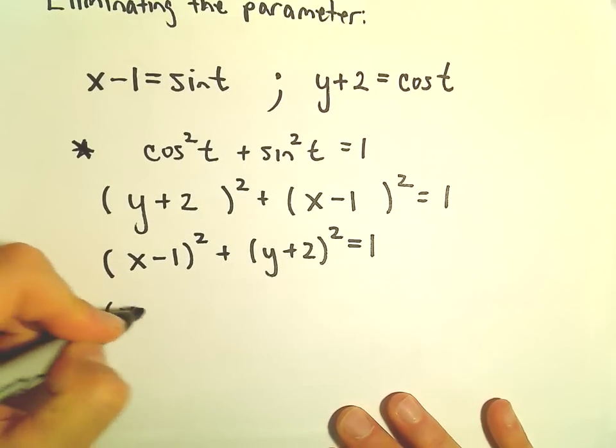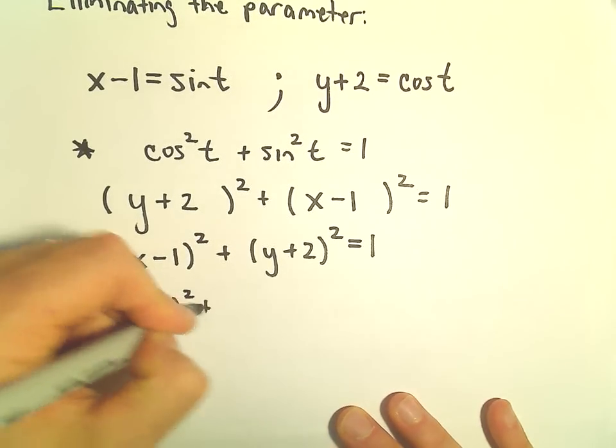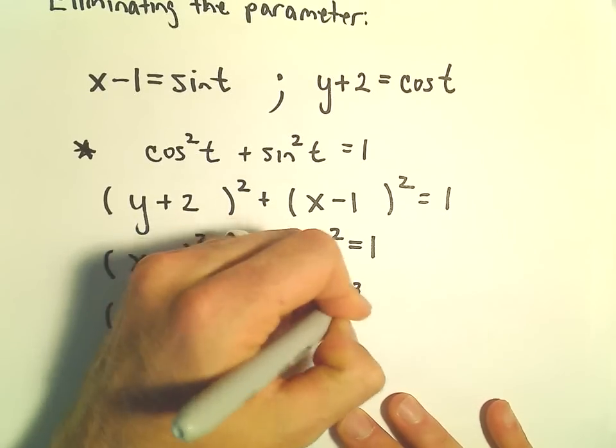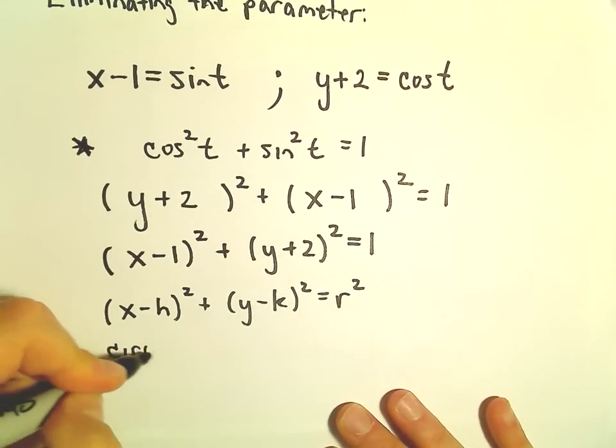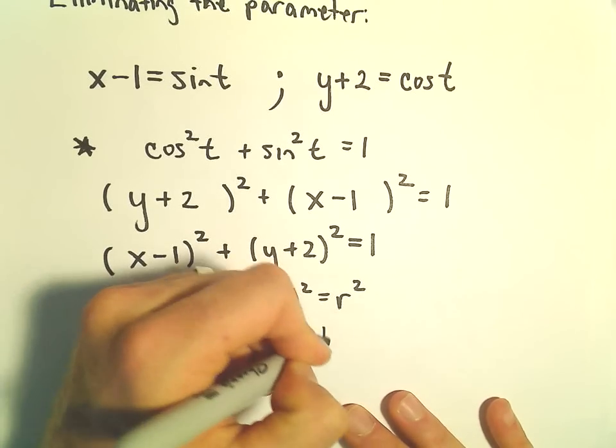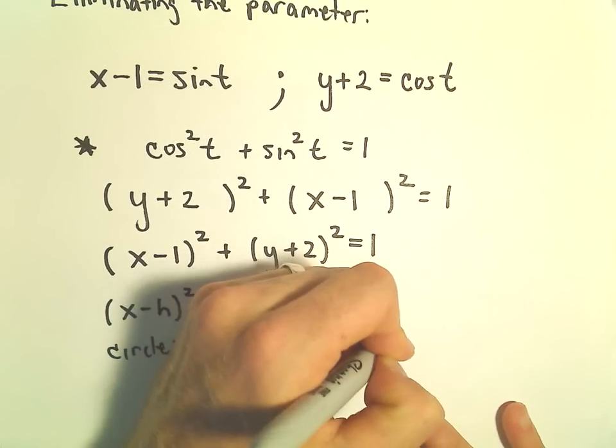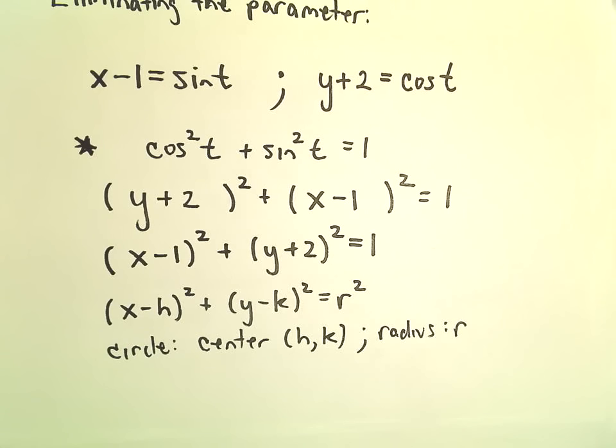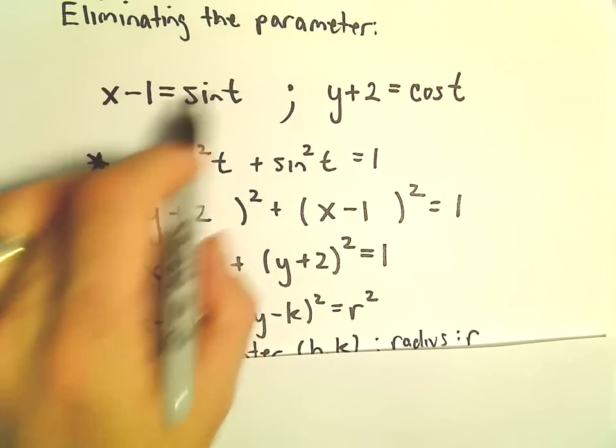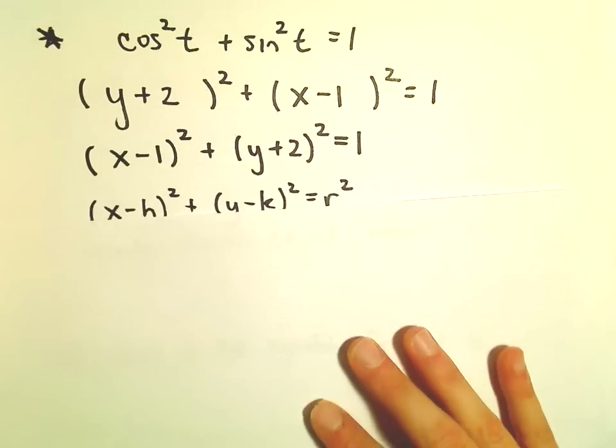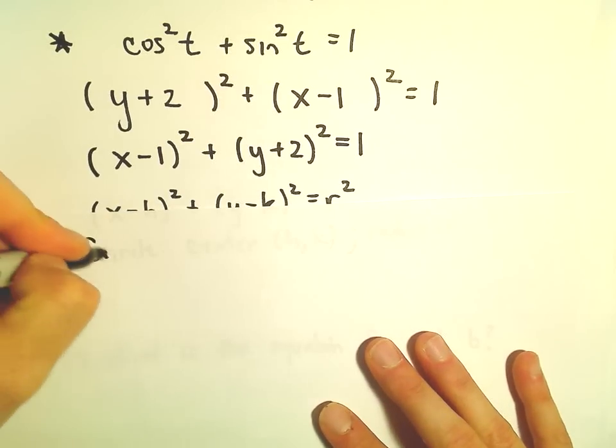Recall, if we have x minus h squared plus y minus k squared equals r squared, this is the graph of a circle with center hk and radius r. In this case, if we start plotting points in our parametric equation, we're simply going to produce the graph of a circle.